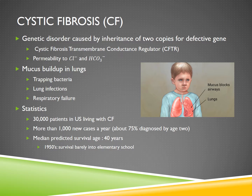Cystic fibrosis is a genetic disorder caused by the inheritance of two copies of a defective gene, and that gene encodes the cystic fibrosis transmembrane conductance regulator, or CFTR, and this transmembrane protein allows for lung epithelial permeability to chlorine and bicarbonate ions.